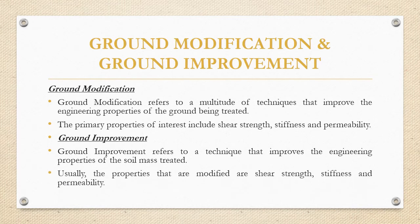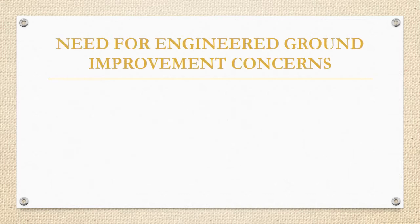Ground improvement refers to a single technique that improves the engineering properties of the soil — usually shear strength, stiffness, and permeability. The chief difference between ground modification and ground improvement is that ground modification constitutes a number of techniques, whereas ground improvement constitutes a single technique. Both aim to improve the engineering properties of the ground or soil.